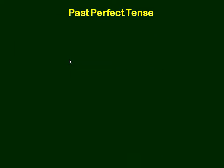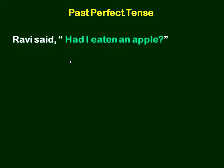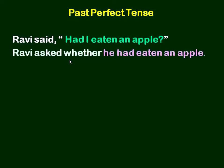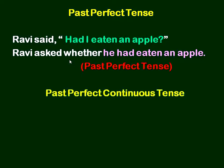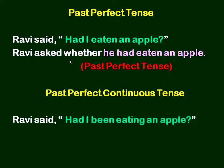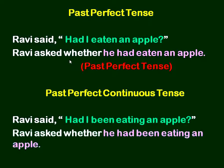Past perfect tense example: Ravi said, 'Had I eaten an apple?' Ravi asked whether he had eaten an apple. So the past perfect tense remains past perfect — no change. Past perfect continuous tense: Ravi said, 'Had I been eating an apple?' Ravi asked whether he had been eating an apple. So the past perfect continuous tense remains past perfect continuous tense. There is no change in tense form.